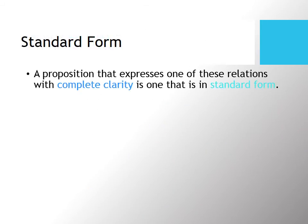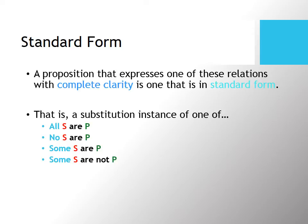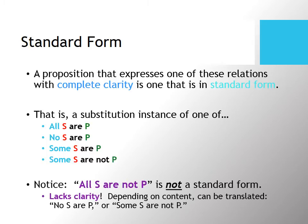Standard form is a proposition that expresses one of these four relationships with complete clarity. It will be a substitution instance of either 'all S are P,' 'no S are P,' 'some S are P,' or 'some S are not P.' By contrast, 'all S are not P' is not in standard form because it lacks the clarity of those four propositions — it could be translated as either 'no S are P' or 'some S are not P.'